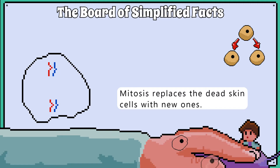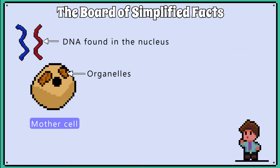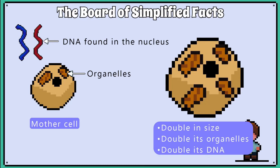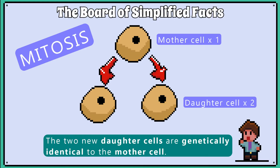This process starts with a cell which we call the mother cell. This mother cell needs to double in size, double its organelles and double its DNA so that when it divides into two new daughter cells, they have everything they need and are genetically identical. So, if you see a diagram where one cell becomes two cells, then that is mitosis.